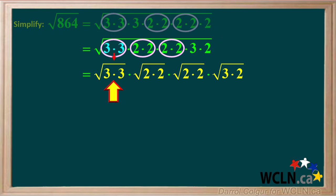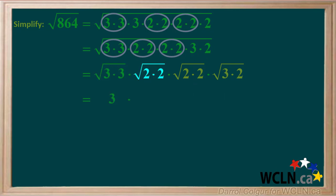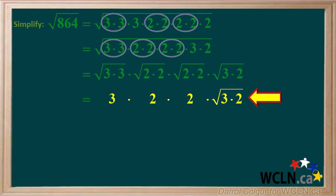Now we'll break it up into 4 separate square roots: the square root of 3 times 3, times the square root of 2 times 2, times the square root of 2 times 2 again, times the square root of 3 times 2. The square root of 3 times 3 is just 3. The square root of 2 times 2 is just 2. The square root of 3 times 2 is just the square root of 3 times 2. So now we have 3 times 2 times 2 times the square root of 3 times 2. 3 times 2 times 2 is equal to 6 times 2, or 12.